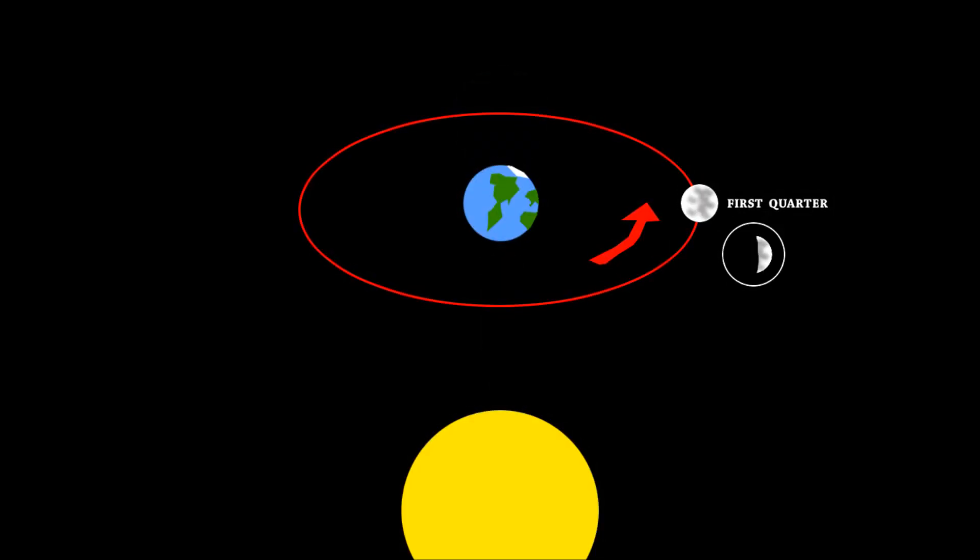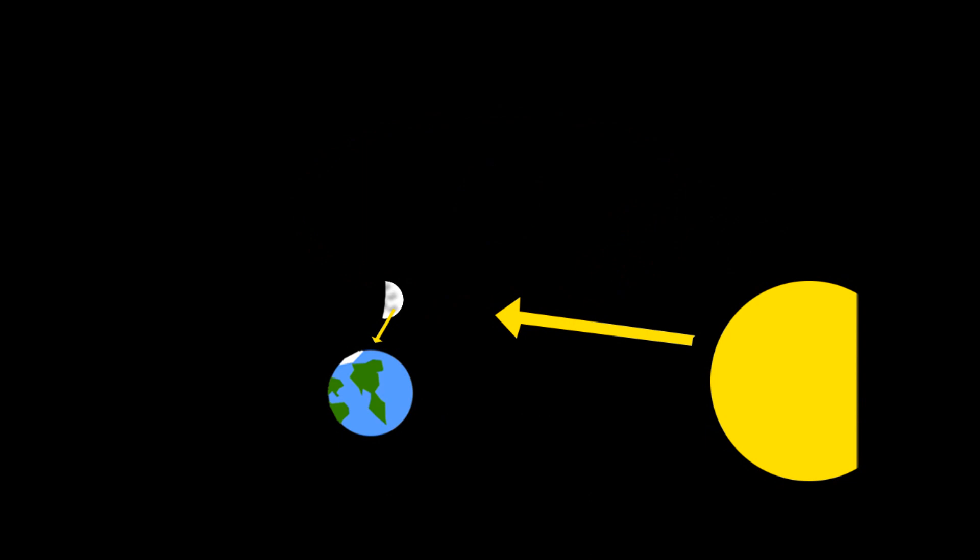Now we move on to the first quarter moon. The moon is directly to the side of the Earth, seen in this diagram. Therefore, as the sun shines upon the moon, the half of the moon that is receiving sunlight reflects the light to the Earth, causing us to only see half of the moon.